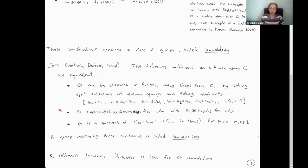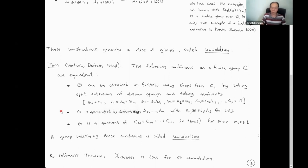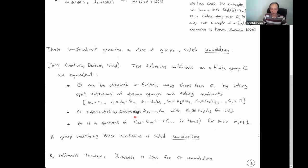By Saltman's theorem — which proves that once you can realize Q, you can also regularly realize a split extension by an abelian group — it follows immediately that the inverse Galois problem over Q(T) is true for semi-abelian groups. It just follows immediately from Saltman's theorem and this construction. Condition two says that G is generated by abelian subgroups A1 up to An, ordered in such a way that Aj normalizes Ai for all i ≤ j.